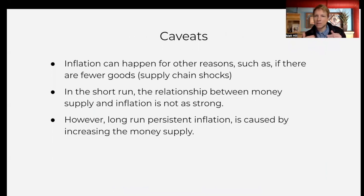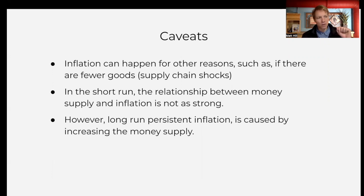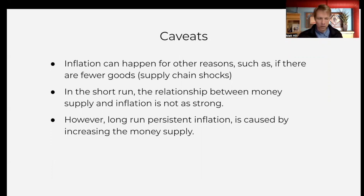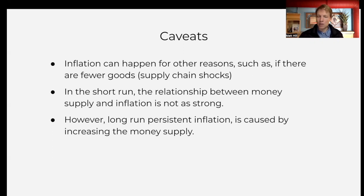As a caveat, this is an aggregate relationship. Sometimes you may have an expansion of the money supply with no inflation because of other reasons, or you may see broad-based inflation because of supply chain shocks. So in the short run, you may not see this relationship between the money supply and inflation, but in the long run, cross-country, this relationship really pops out. If you zoom out, you will see this relationship between money creation and inflation — this is where inflation ultimately comes from.